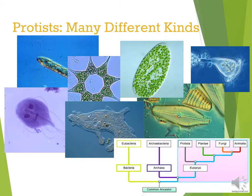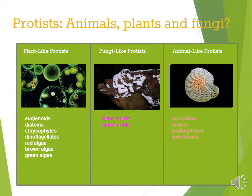Protists — there are many different kinds and they comprise the eukaryotes. Most are unicellular. So there are plant-like protists, fungi-like protists, and animal-like protists. Here are different types of plant-like protists — you may be familiar with algae; dinoflagellates are kind of cool, and diatoms too. These are all just really neat to look at.